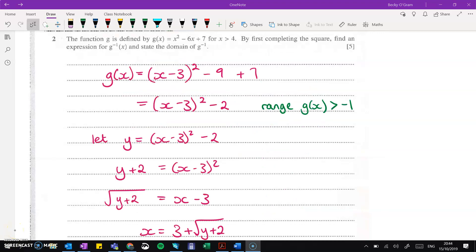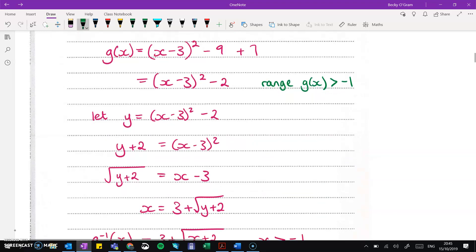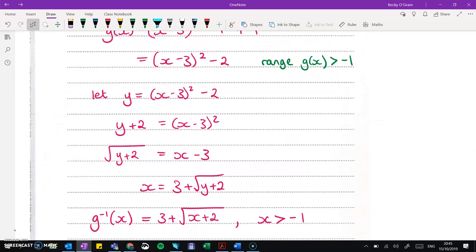Question 2 is about functions. So first, we are asked to complete the square on g(x). That's just taking you through those steps there. It's completing the square, you can go look that up if you're not following it. Then find an expression for the inverse. Just note here, we've got x is greater than 4 in the question, so we'll need to put that in later on.